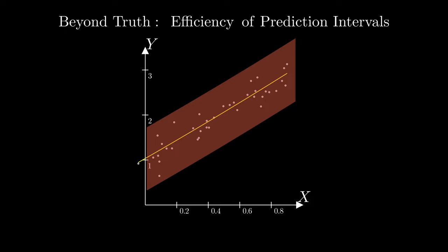This is where the second crucial property comes into play: efficiency. Efficiency is directly linked to the tightness of the interval. The tighter the interval, the more efficient it becomes. Remember, when it comes to prediction intervals, it's not just about their coverage validity, but also their efficiency or tightness.